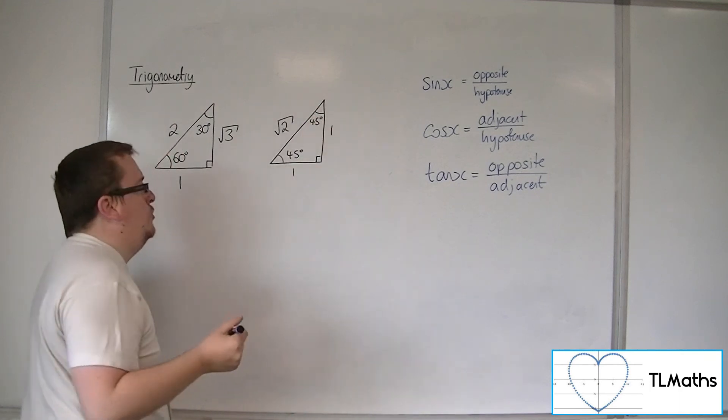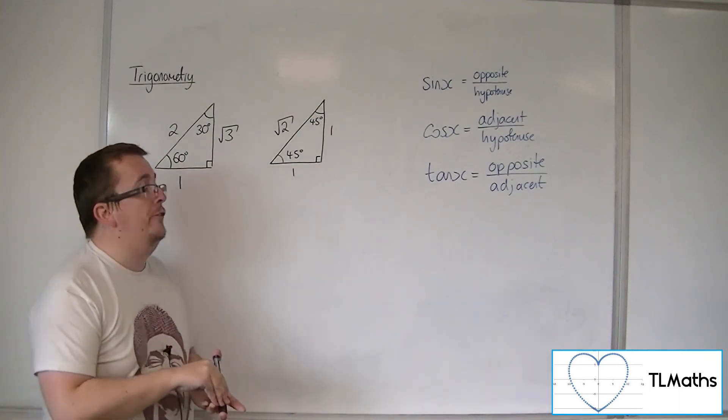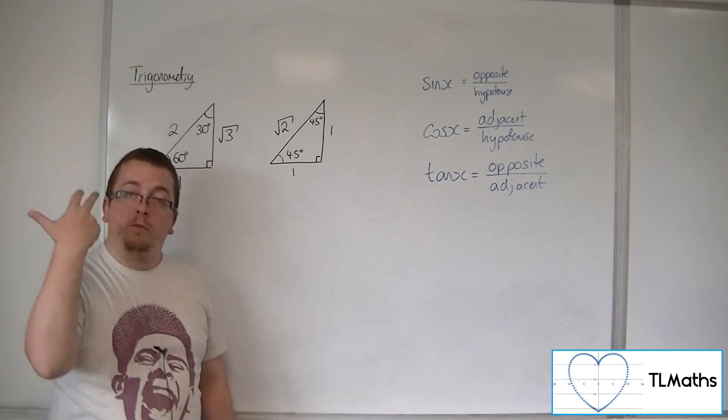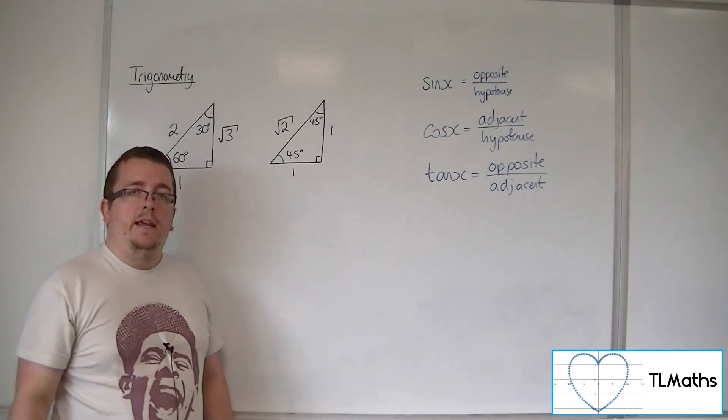So this triangle allows you to find sine, cos and tan of 45 degrees in exact form. OK, and I'm going to show you how we get there in the next video.